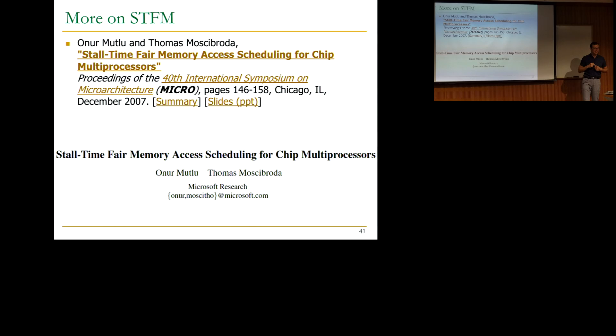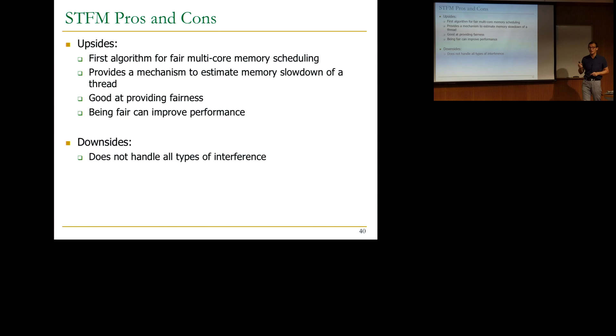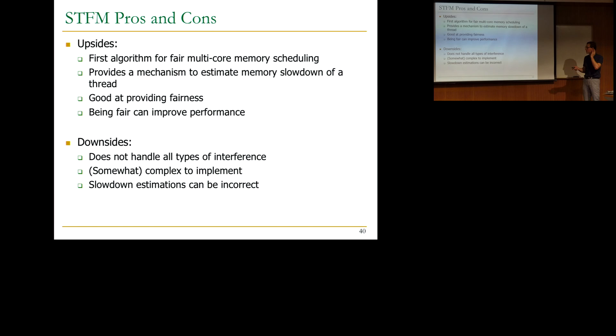At least the morning will be spent on different ways of doing memory scheduling and handling interference in the memory system. This is the first algorithm for pair multi-core memory scheduling targeted for DRAM, and it has a lot of benefits. The downside is it's relatively complex to implement, it doesn't handle all types of interference, and slowdown estimations can be incorrect — and as I said, we were going to get back to that with stall time fair memory scheduling.